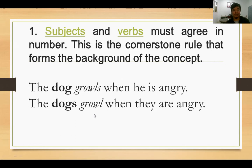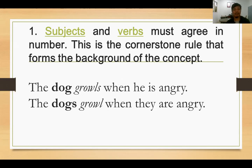Bandingkan dengan kalimat kedua: 'The dogs growl when they are angry.' Di sini kata dogs ada S yang menunjukkan bahwa subjectnya plural. Ketika subjectnya plural atau jamak, maka kata kerjanya harus menyesuaikan — growl, tidak perlu ditambahkan S atau ES. Contoh lain: 'She goes to school' — singular. Tapi 'I go to school' — tidak pakai S. They, we, I, you tidak menggunakan S dalam present tense.